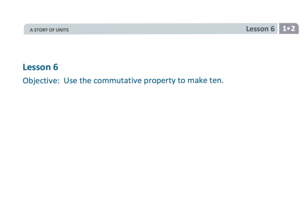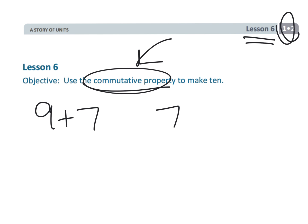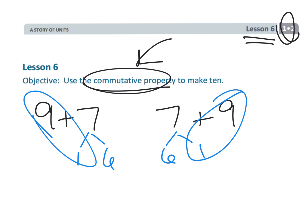That wraps up first grade module 2 lesson 6, where we're formalizing the concept of the commutative property so that students immediately see that 9 plus 7 and 7 plus 9 are the same. And that you can take that 7 and decompose it to be 1 and 6 or 6 and 1, and in both cases you're going to get the exact same answer.